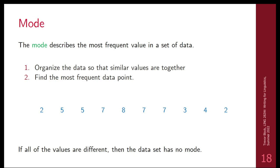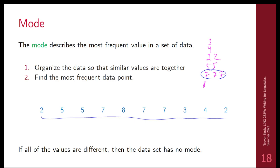The mode is just the most frequent value in a data set. Whether you're working with reaction times in milliseconds or naturalness ratings on a scale of one to seven, you order your values so common ones are together, then determine which is most frequent. In this list — 2, 5, 5, 7, 8, 7, 7, 3, 4, 2 — the most common number is seven. So the mode is seven. This tells you the most popular result.